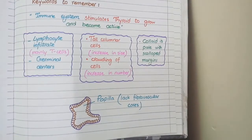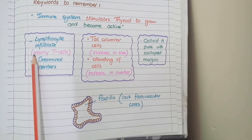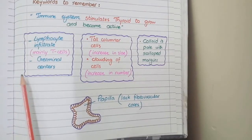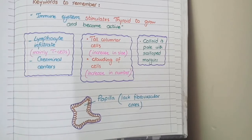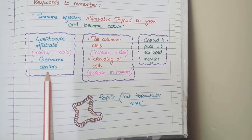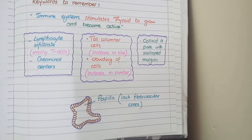The first keyword is 'immune system,' which appears as lymphocytic infiltrates. These lymphocytes are mainly T lymphocytes, and they also form germinal centers. This means the lymphocytes form follicular aggregates that show germinal centers, which are an indicator of lymphocyte proliferation.